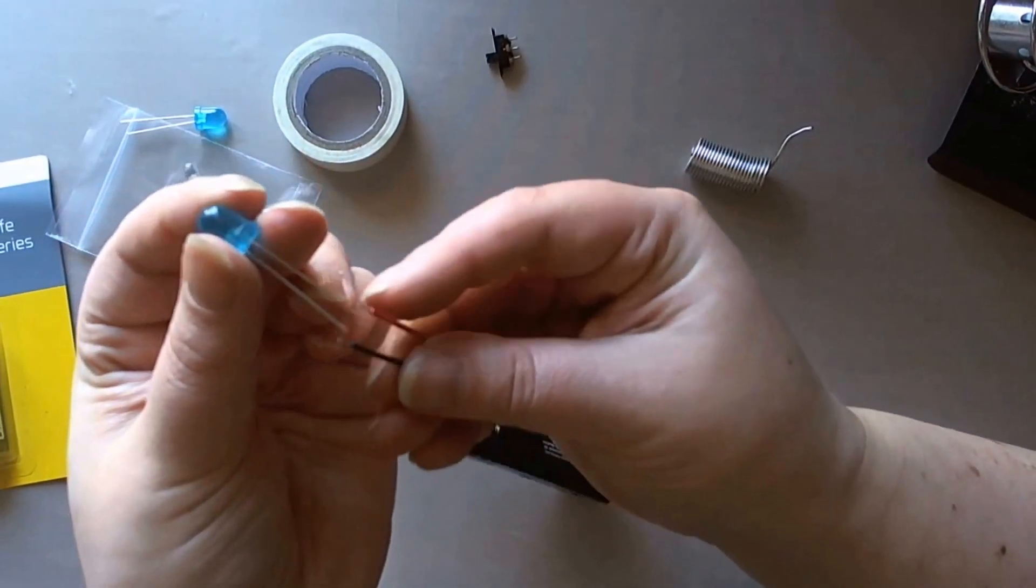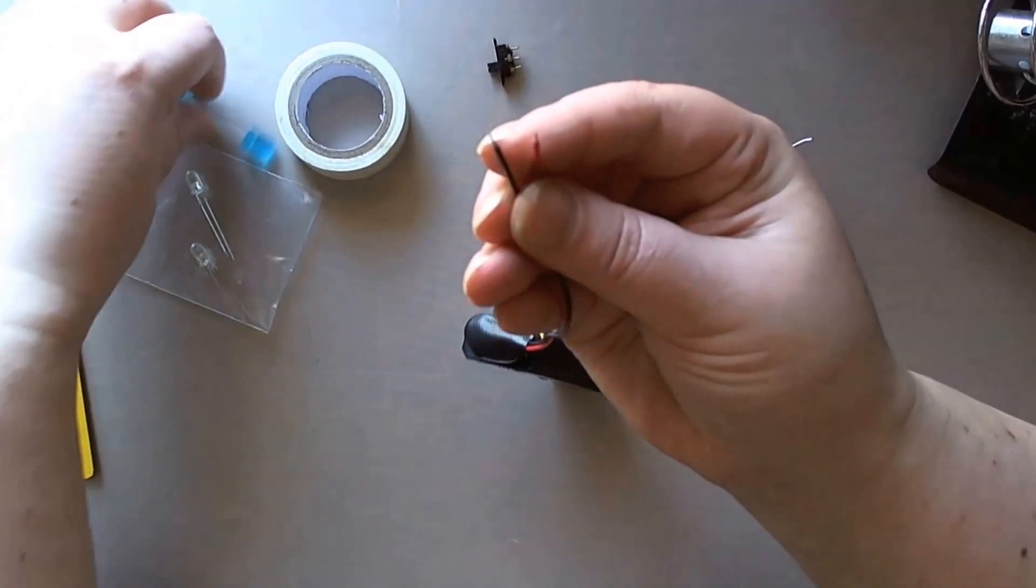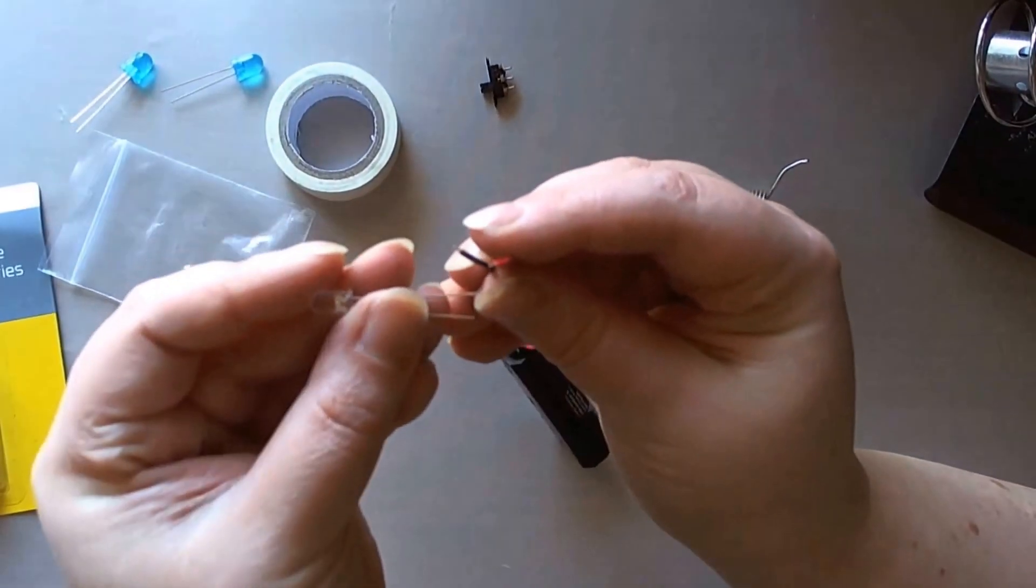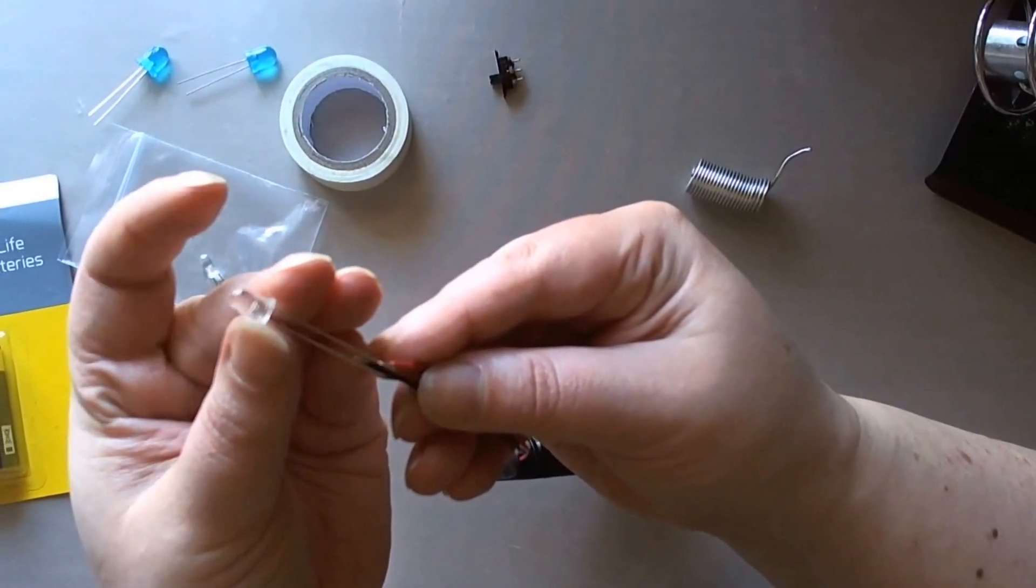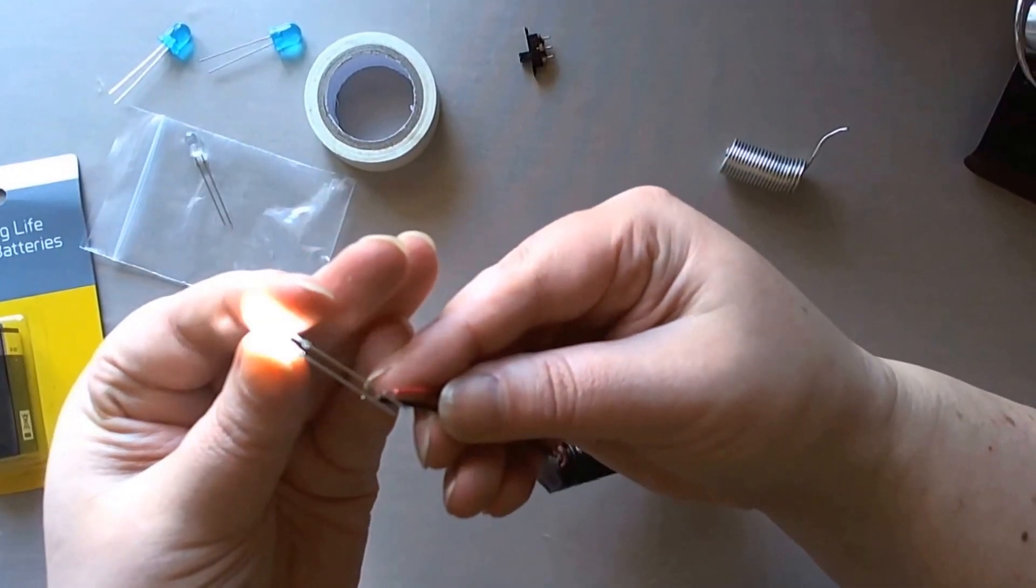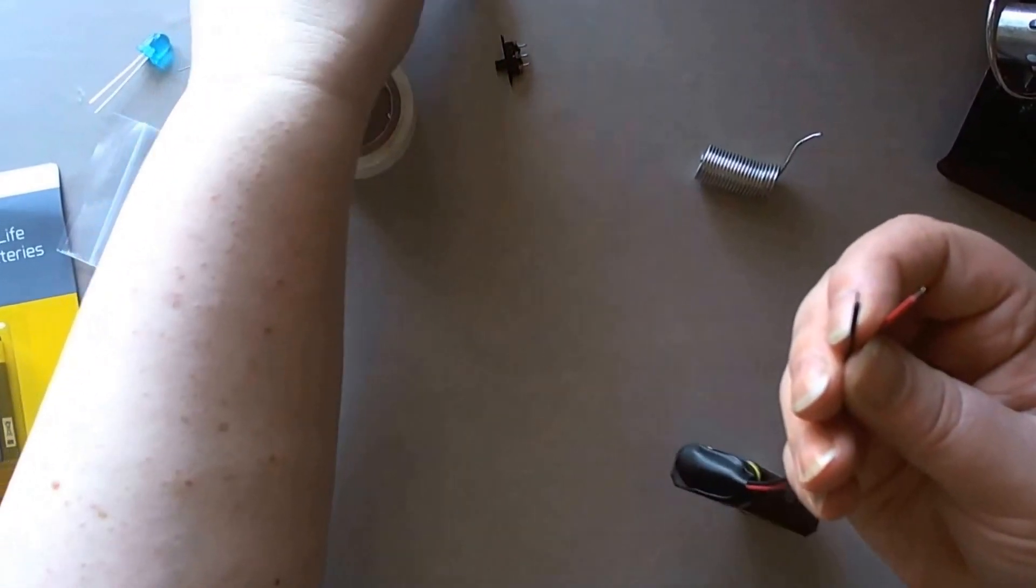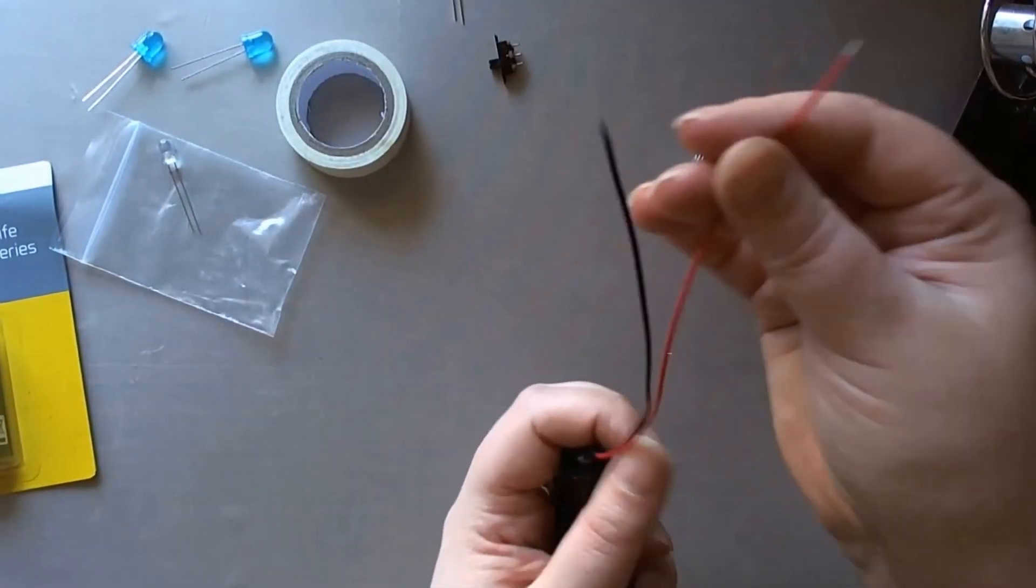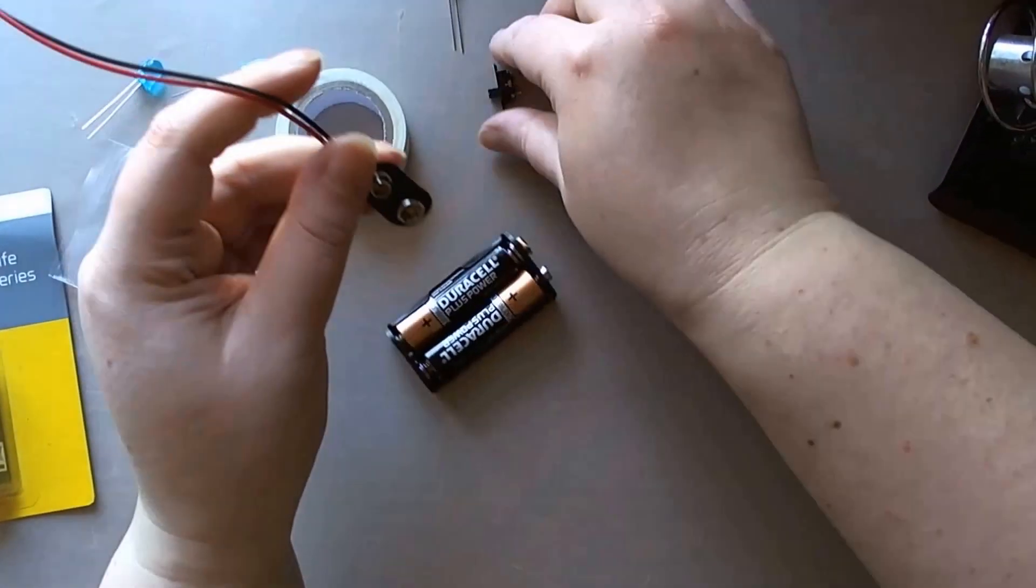So that's a flashing blue one. This one is also a flashing blue. That one is a white, and that one is a white. So I'm going to use a white one.